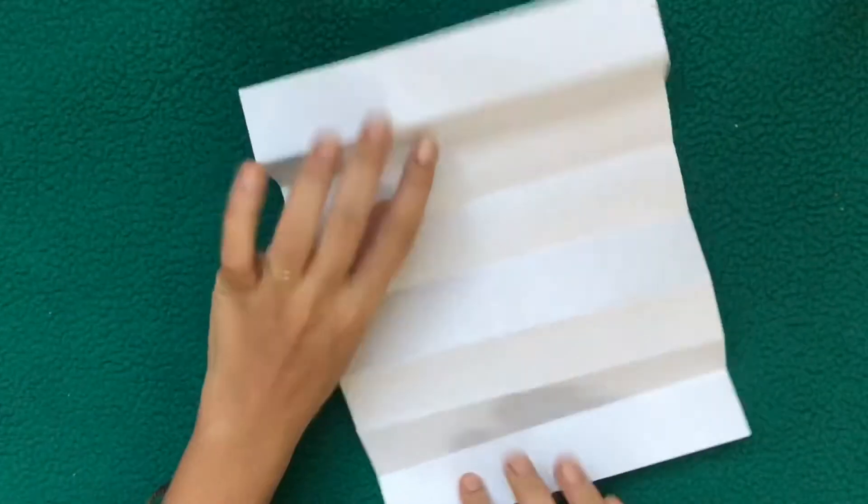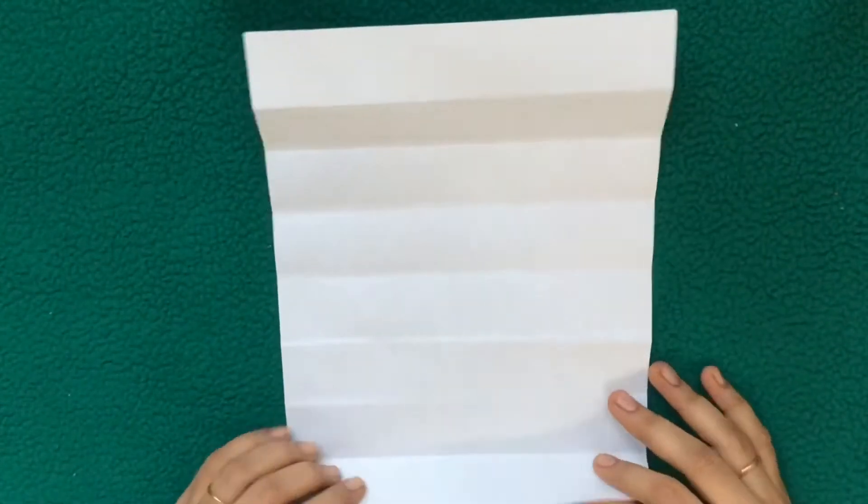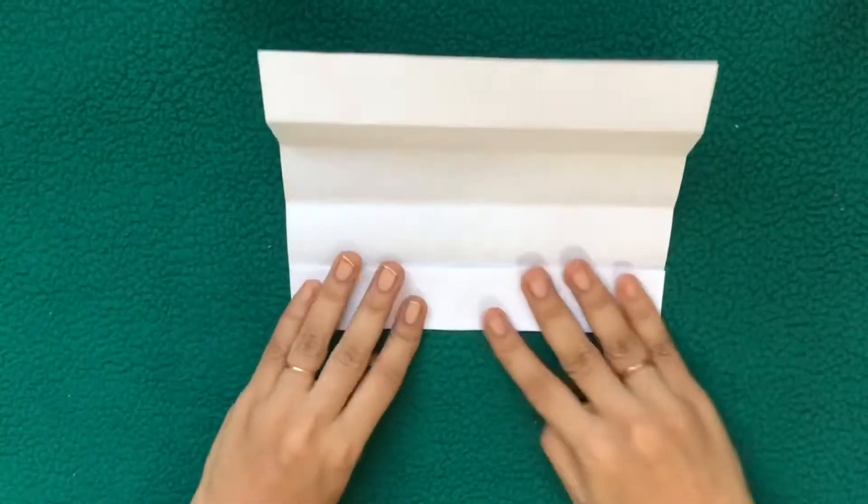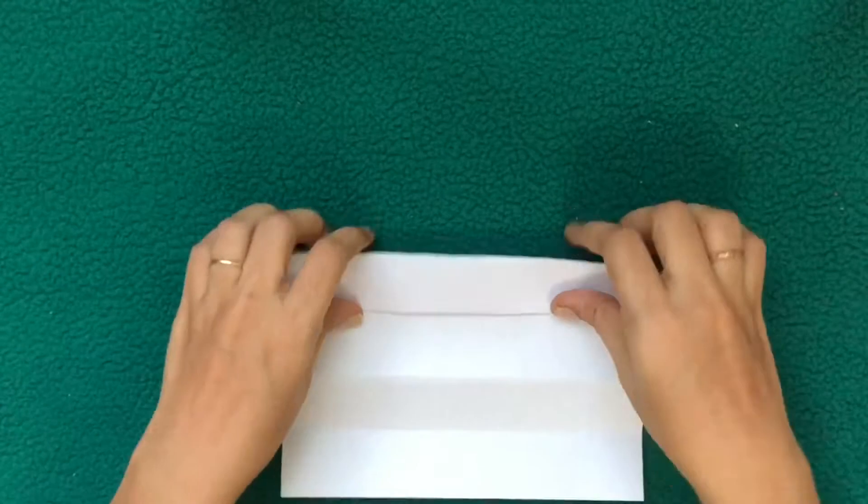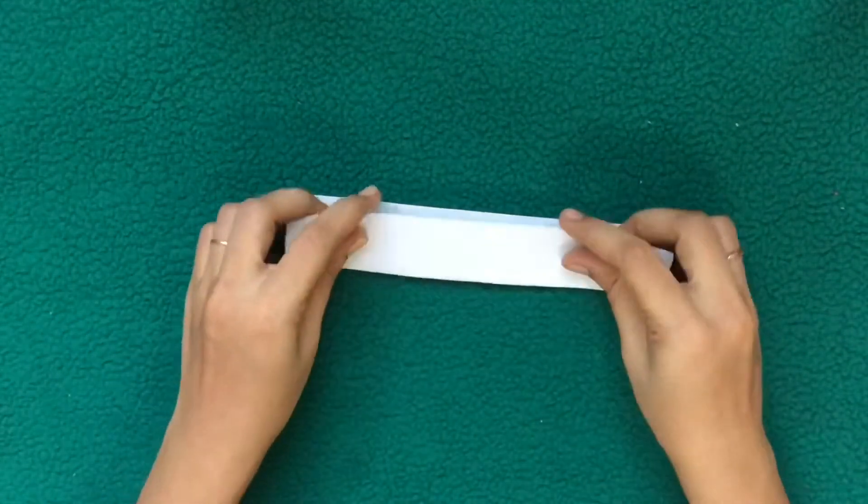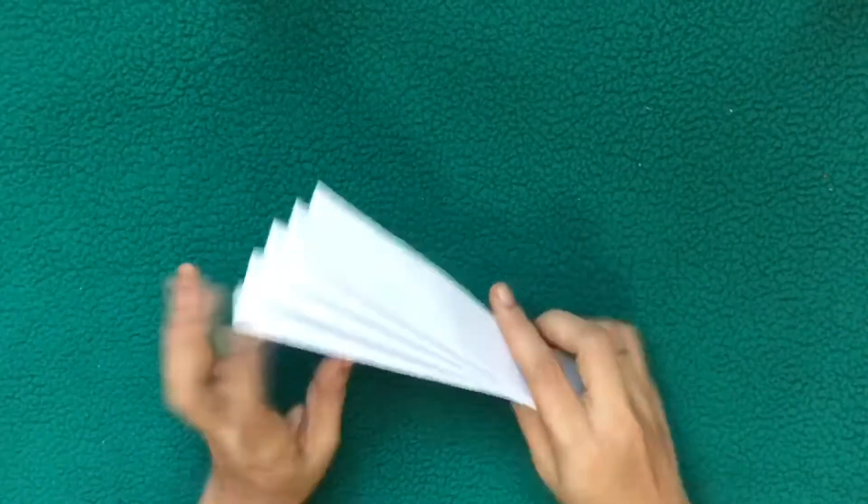Now I have to fold one step forward, turn back, and again fold, turn back, and again fold, turn back. Fold, turn, fold, turn, fold like that. This is zigzag fold.